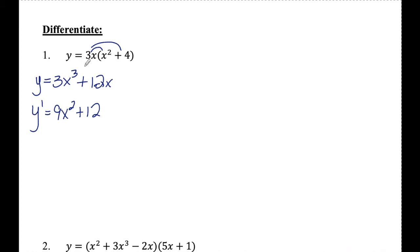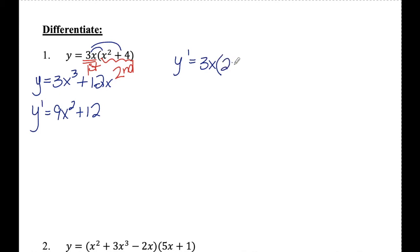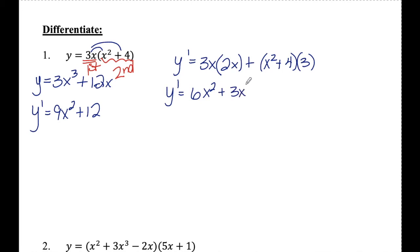But let's take a look at using the product rule here since this is going to be nice and easy. The 3x is the first function, and x squared plus 4 is the second. Using the product rule to find y prime: first times the derivative of the second — the derivative of x squared is 2x, and the derivative of 4 is 0 — plus the second, x squared plus 4, times the derivative of the first, which is 3. Multiplying this out gives 6x squared plus 3x squared plus 12, which is 9x squared plus 12, the same answer as before.